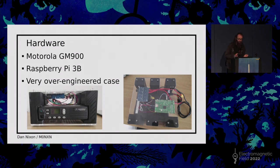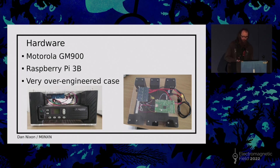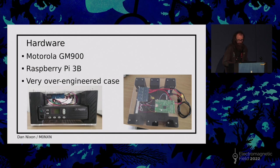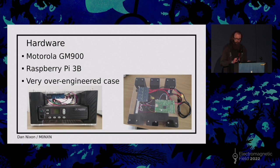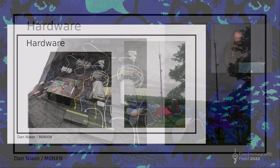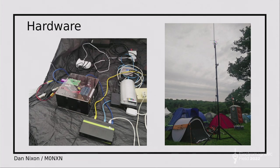In terms of the hardware I'm actually using for the transmitter at EMF, it's essentially a Motorola GM900, a Raspberry Pi, and what I've been accused of designing as a very over-engineered case. There's also a blue PCB with a few relays for things like turning the power off, which is a licensing condition — you have to be able to turn it off if something goes wrong. It's now installed in the tent, though high winds have interacted with the mast, so it's on its lowest height, but it still seems to reach most parts of the site.